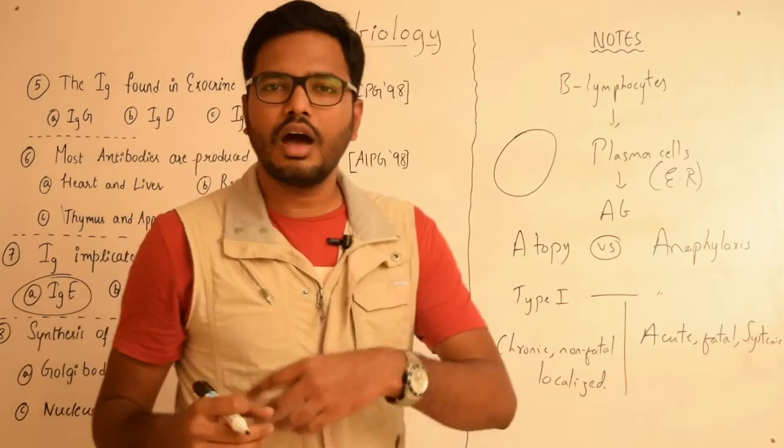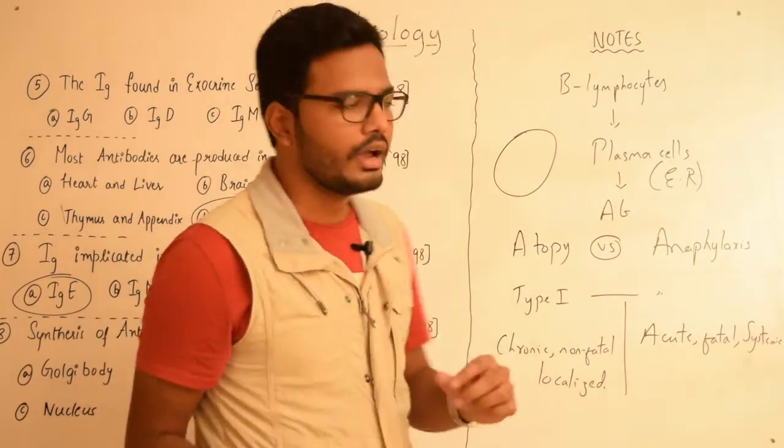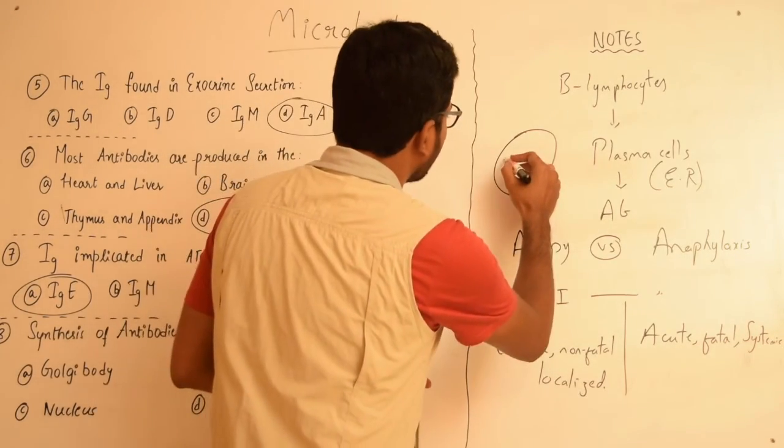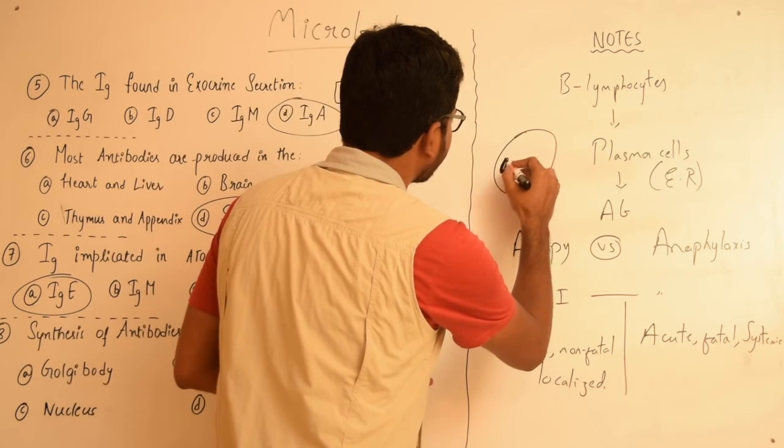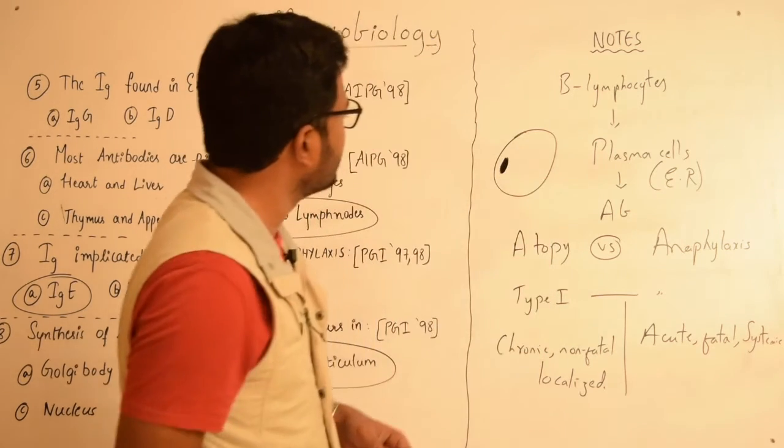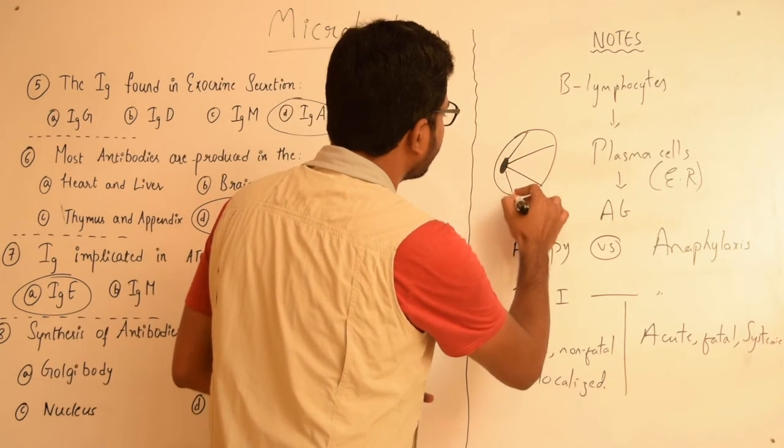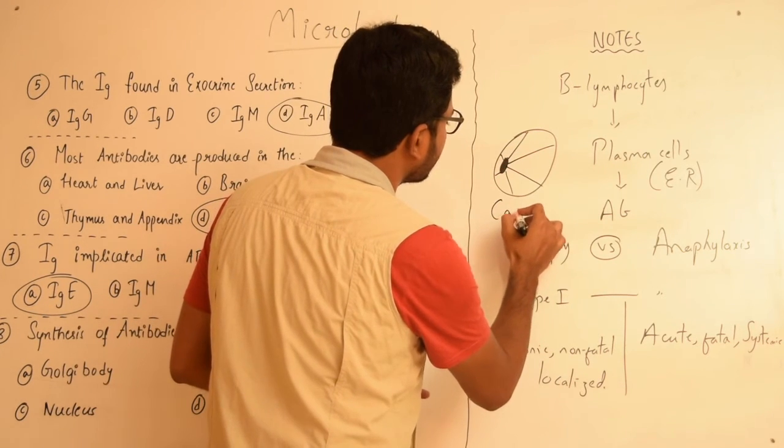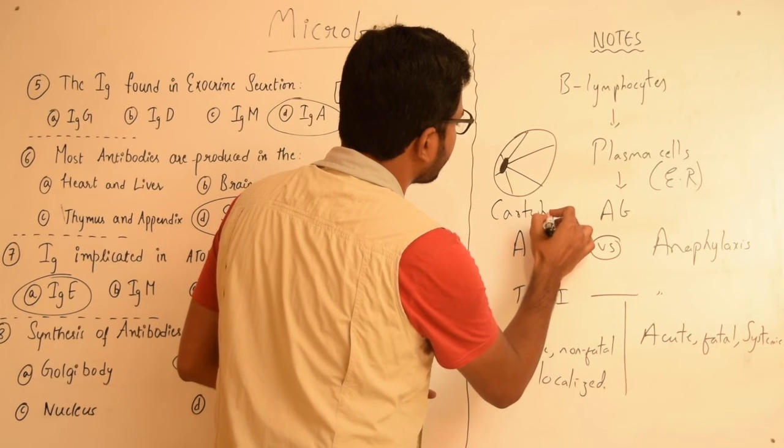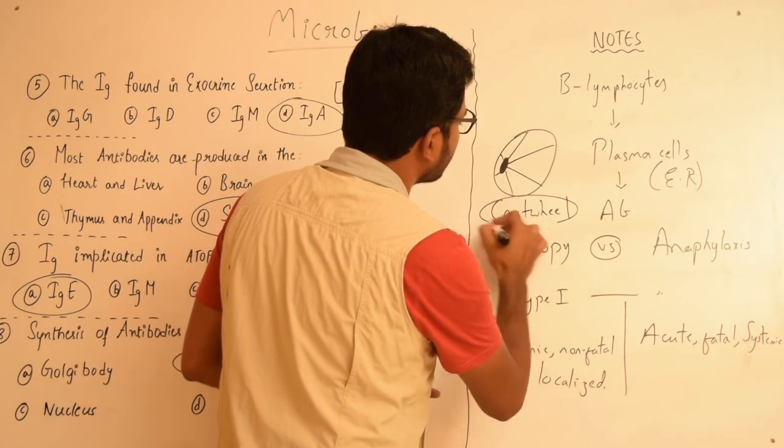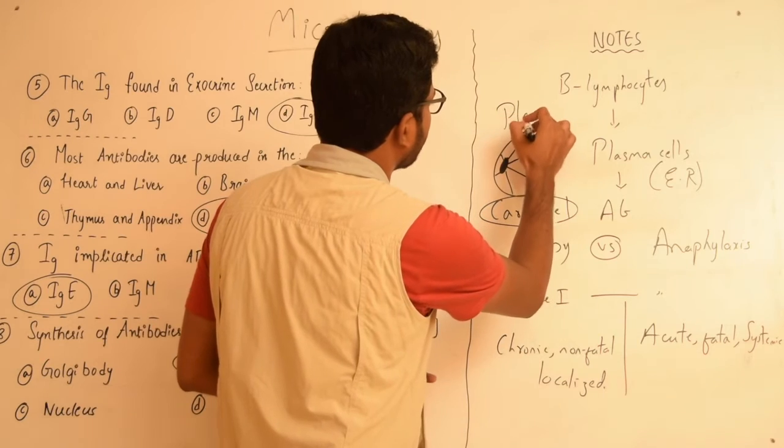It is twice larger compared to a small lymphocyte, and it contains an oval-shaped nucleus which is eccentrically present. It also contains numerous chromatin material peripherally, giving a characteristic cartwheel appearance. This is the structure of a plasma cell.